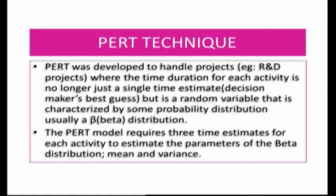This was about the critical path method, where we calculated different floats: the independent float, the free float, and the total float. Let us now understand the PERT technique, which was developed to handle R&D projects where the time duration for each activity is no longer a single time estimate but a random variable characterized by a probability distribution using a beta distribution.